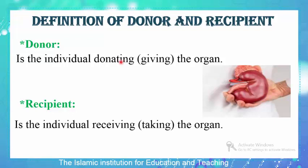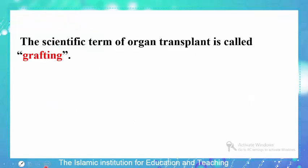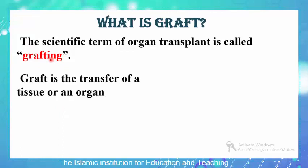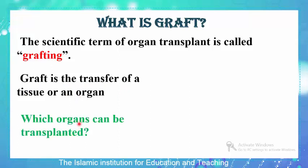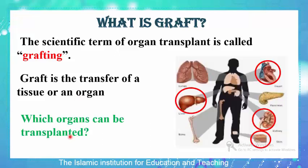Pay attention that the donor can be anyone — it can be a brother, a cousin, or someone living in Syria. In fact, the transplant of an organ scientifically is called grafting. A graft is the transfer of a tissue or an organ.